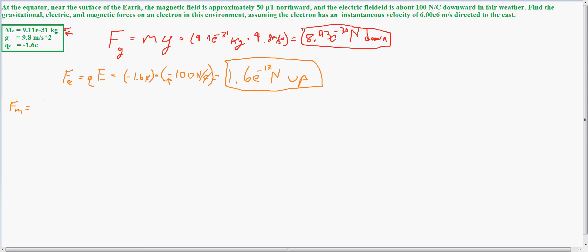The final one is the force due to magnetism, which is equal to qvB sine theta. And because we are talking about a magnetic field which is normal to Earth, we're going to have a sine of 90 degrees.